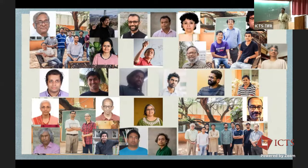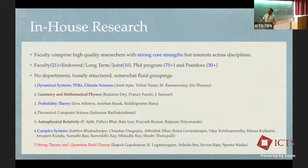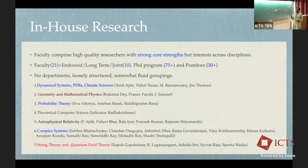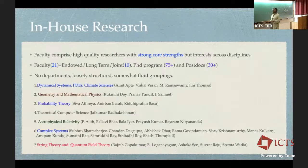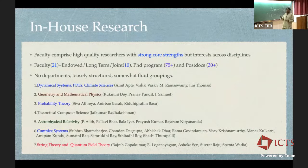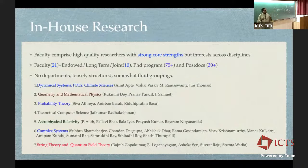We have several researchers in a number of areas and no departments — just fairly fluid groupings. We have about 30 faculty, over 75 PhD students in our active PhD program under the TIFR umbrella. We take students through both the TIFR exam and JEST, the joint entrance exam. We have an active postdoctoral program with over 30 people. Areas in the mathematical sciences include dynamical systems, PDEs, climate sciences, geometry and mathematical physics, probability, and very recently we have our first computer scientist.